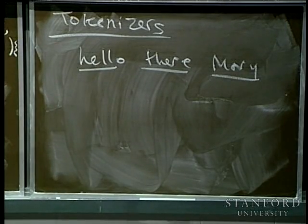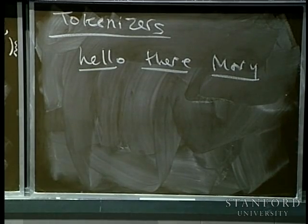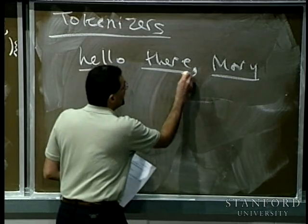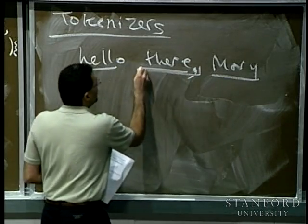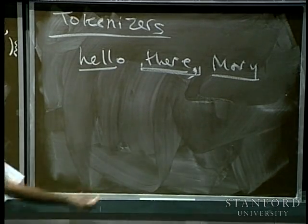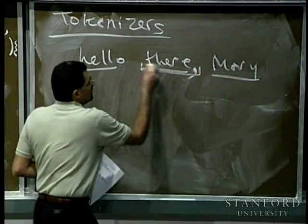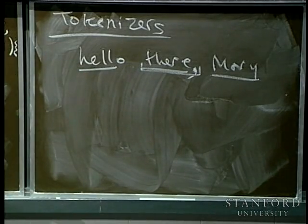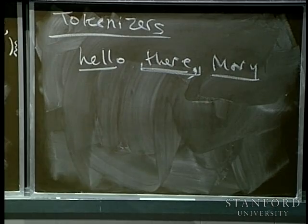We like to think of tokens as words, but computer scientists say token because it's a more general term. If I say 'Hello, there, Mary' — 'there,' with the comma might actually be considered one token because it's delimited by spaces. Here's a space on each side, so the comma is included. That's why we call them tokens and not words.